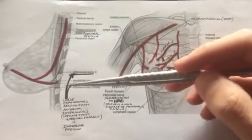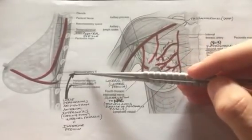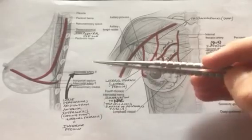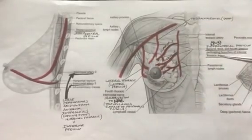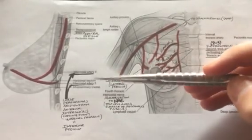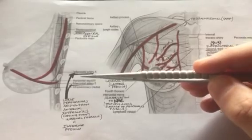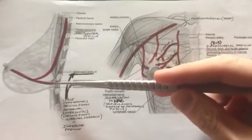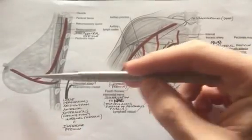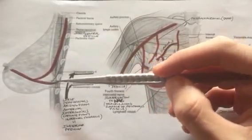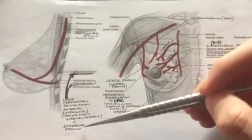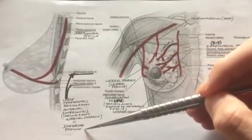Similarly, the inferior pedicle is based on intercostal arteries 4 and 5, which come off the internal thoracic. The internal thoracic gives off the anterior intercostal arteries, which pierce through and provide blood supply at the inframammary fold to the nipple areola complex, composing the inferior pedicle.